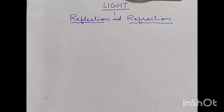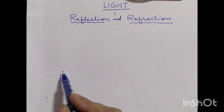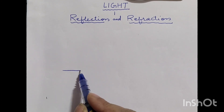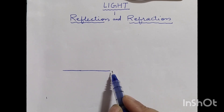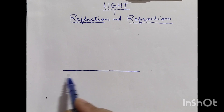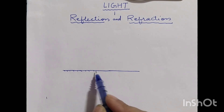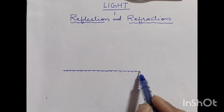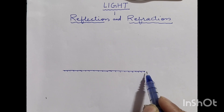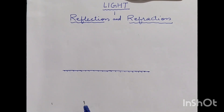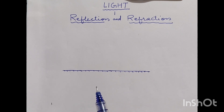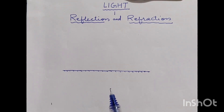Now, what is reflection — you have studied this in 8th class also. In 8th class you studied the laws of reflection. I am recalling your 8th class knowledge. This is a reflecting surface. I am not explaining only for a plain mirror. Laws of reflection are applicable to all types of reflecting surfaces, whether it is a plain mirror or spherical mirrors like concave or convex.